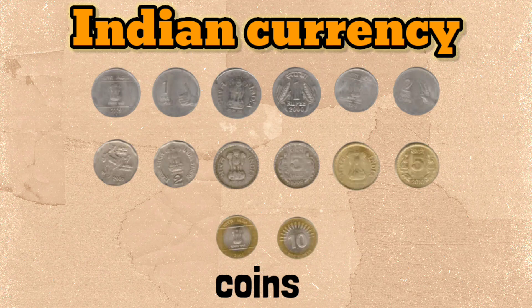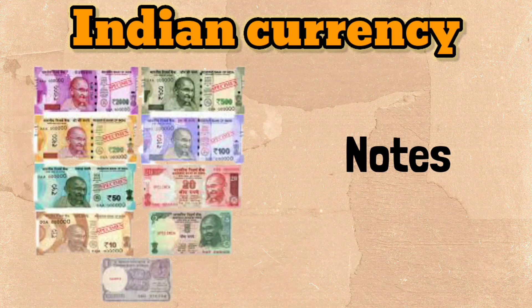In India there are five types of coins: 1 rupee coin, 2 rupee coin, 5 rupee coin, 10 rupee coin, and 50 rupee coin.